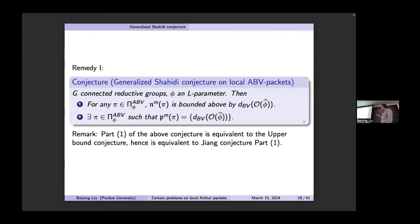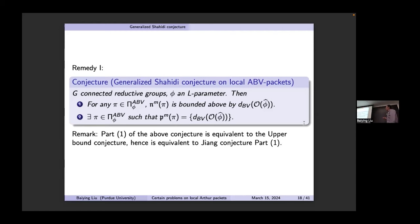The L-packet's upper bound may not be unique, so we conjecture that if you consider the ABV-packet you get a unique upper bound. This independent representation in the packet — the π-fat — corresponds to a nilpotent orbit in the so-called Barbasch-Vogan variety, and π-fat-hat corresponds to the Fourier transform of that orbit. You get an orbit of the dual group and take the Barbasch-Vogan dual — this is conjectured to be the upper bound. This upper bound part is actually equivalent to the upper bound conjecture and also equivalent to Johnson's conjecture part one.